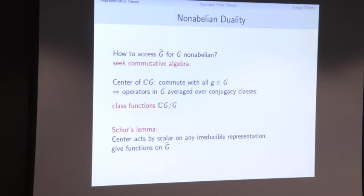By Schur's lemma, if you have an operator that commutes with the whole group action, on each irreducible piece it acts just by a scalar, just by a number. So it gives us a function on the dual: for any irreducible representation, every central element gives a scalar. So we've produced a bunch of functions on the dual.